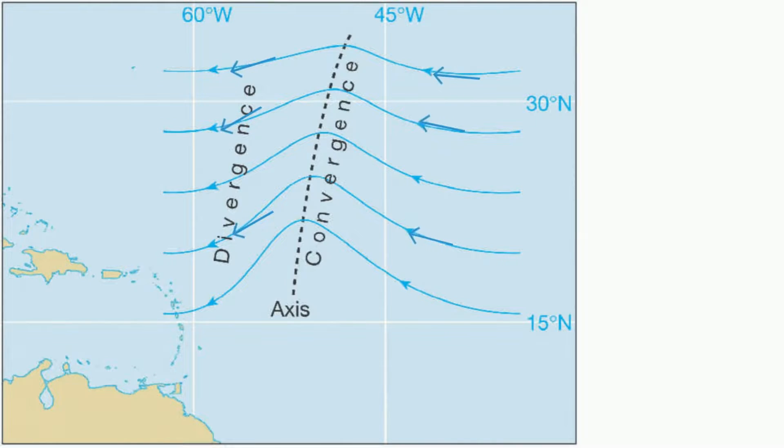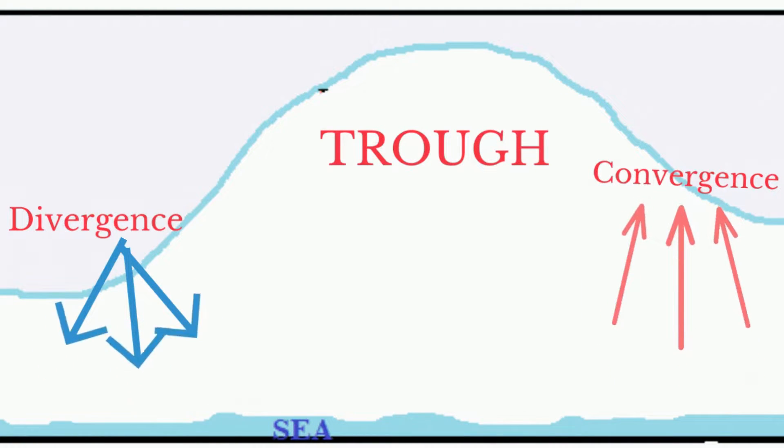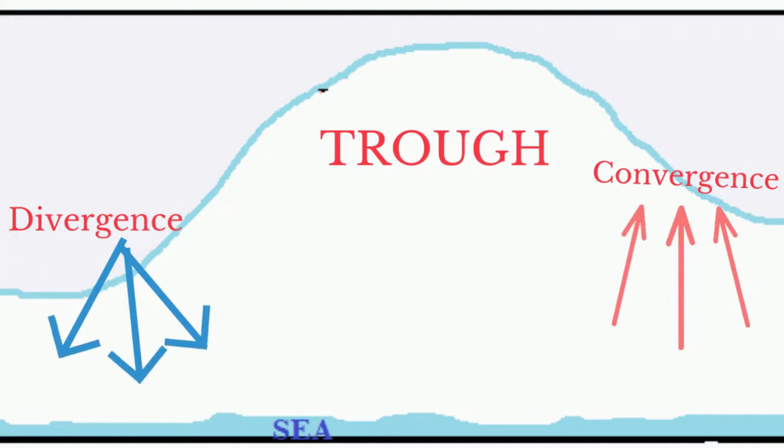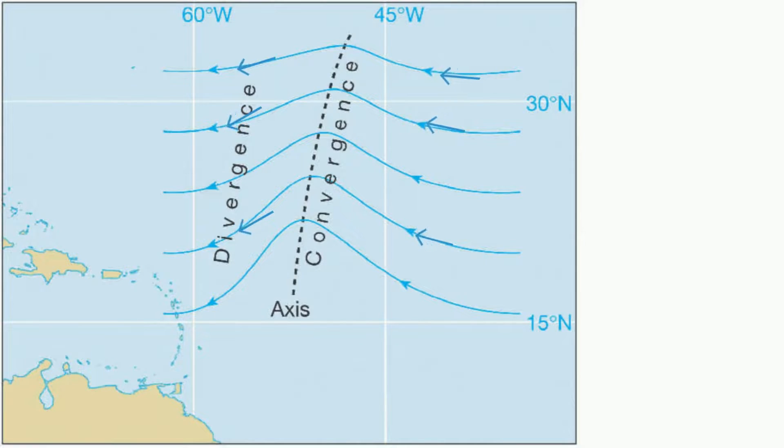To the west of the trough is a zone of divergence, while to the east of the trough is a zone of convergence.